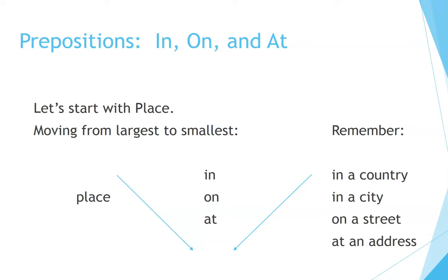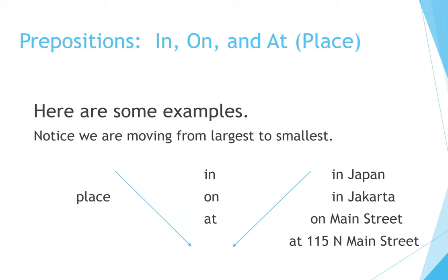Let's start with place, moving from largest to smallest. In a country, in a city, on a street, at an address. Here are some examples: in Japan, in Jakarta, on Main Street, at 115 North Main Street.